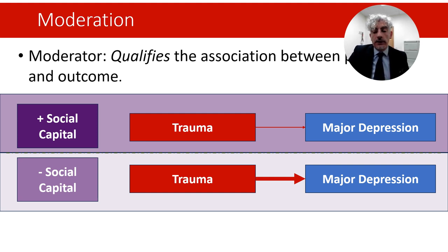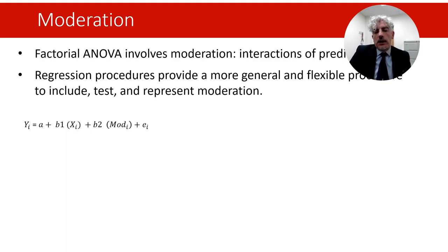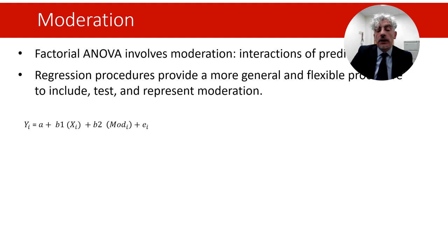This is an example of moderation where the strength of the association between an exposure like traumatic events and an outcome depends on a third variable — the moderator. The interactions between predictors in a factorial design are tests of moderation of the effects of a predictor on an outcome. Mathematically, a factorial design is identical to the regression procedures I will illustrate, but the advantage of regression methods is that they are more general and flexible and allow including, testing, and representing moderation by different types of variables.